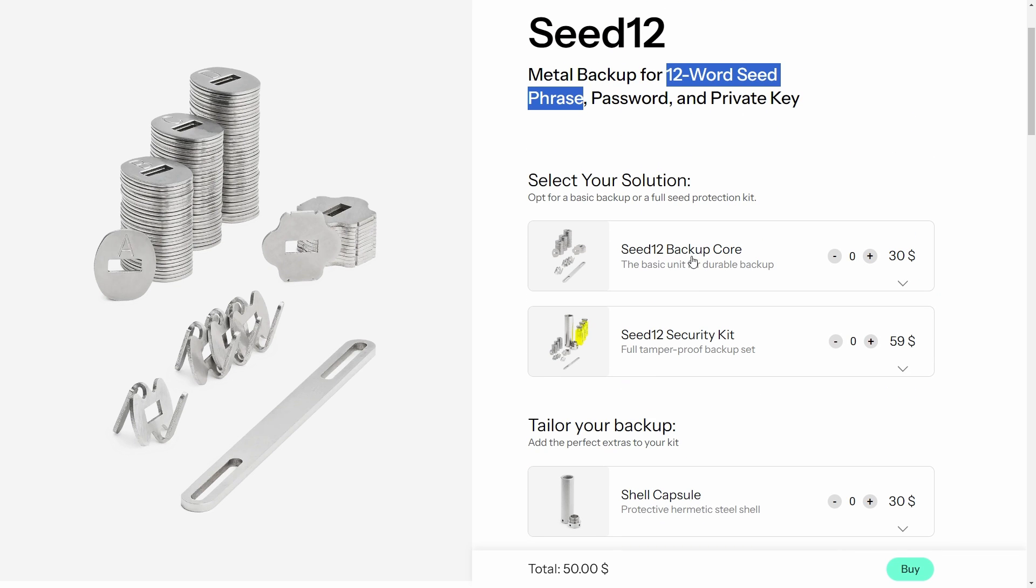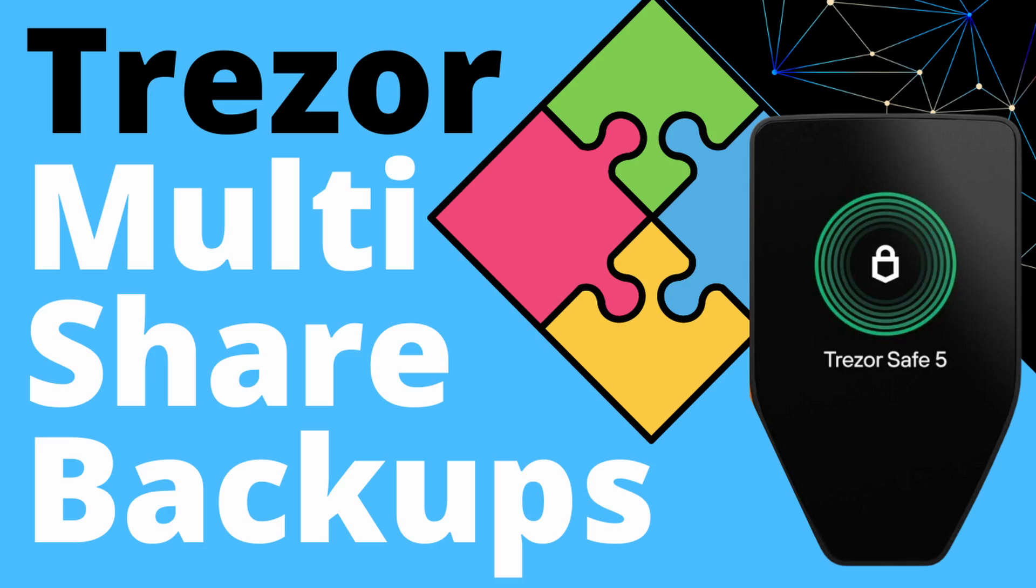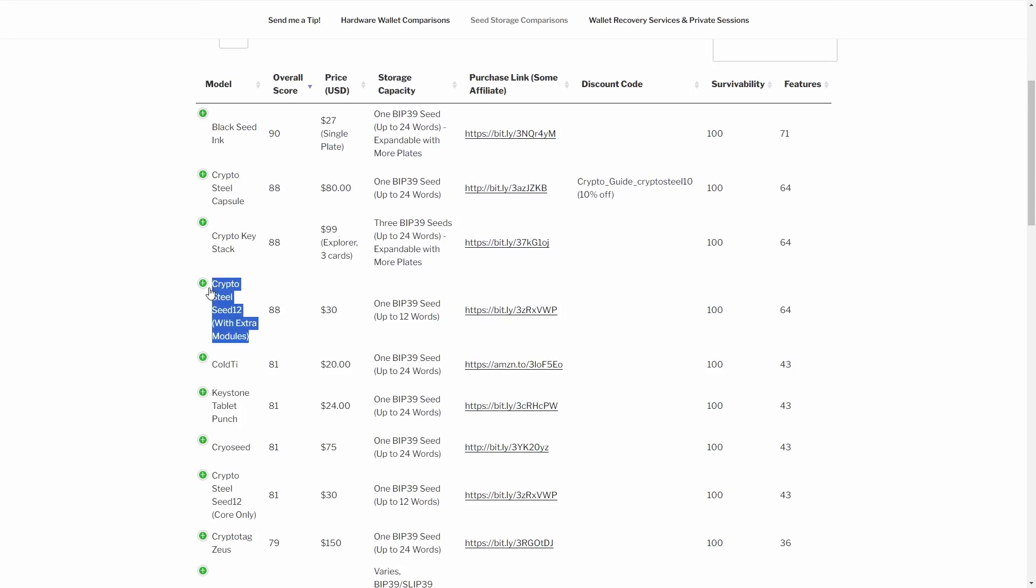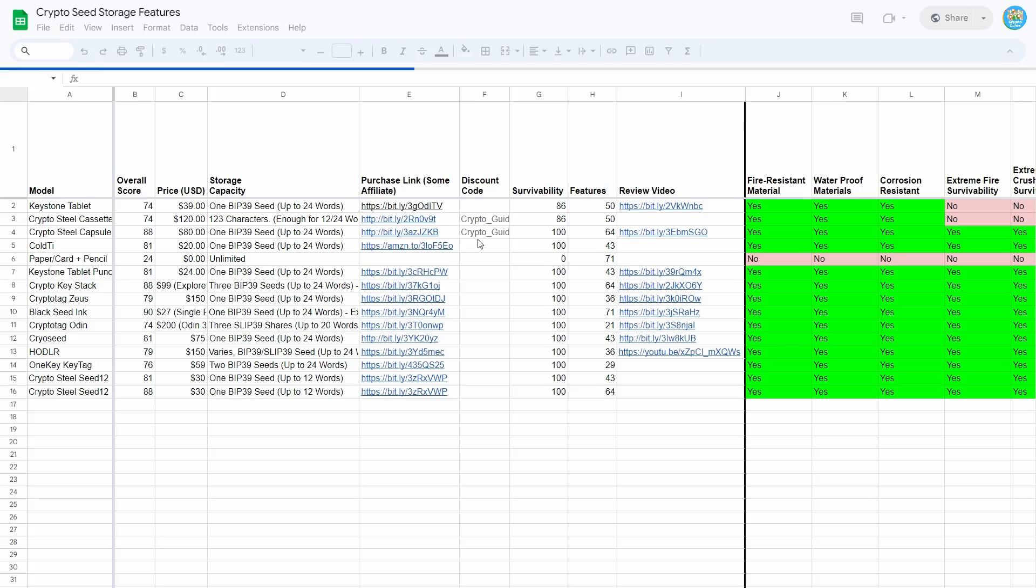If you're someone who has a 24-word BIP39 seed or even a 20-word SLIP39 seed that Trezor are pushing as a new standard, your best bet really would be to probably stick with the original CryptoSteel capsule or even just to buy two of the Seed12 core modules and sort of identify which is the first half of the seed and which is the second. I added it onto my seed storage comparison website and you can see a breakdown of where the scores come from here.